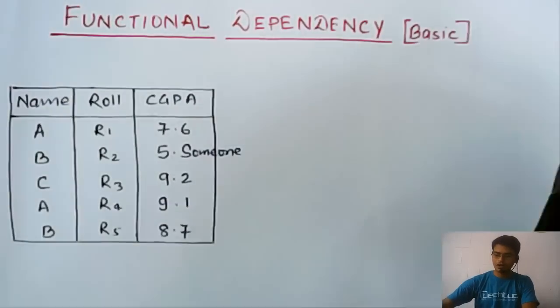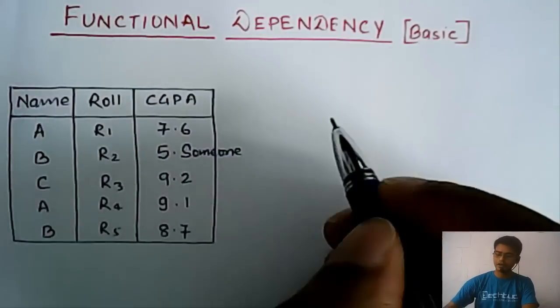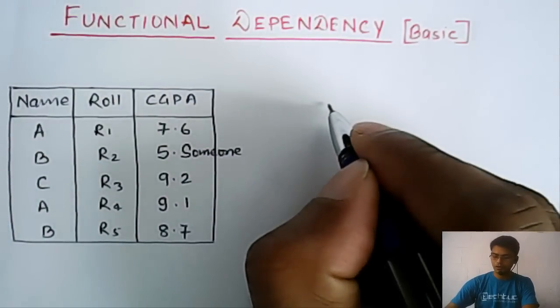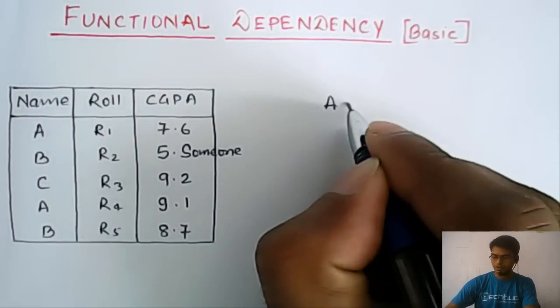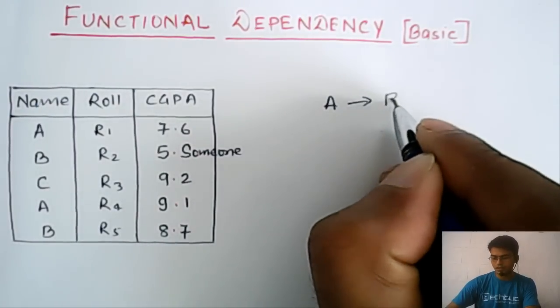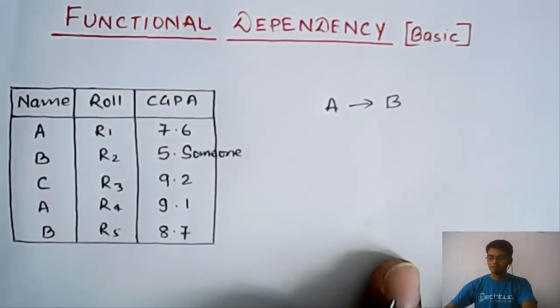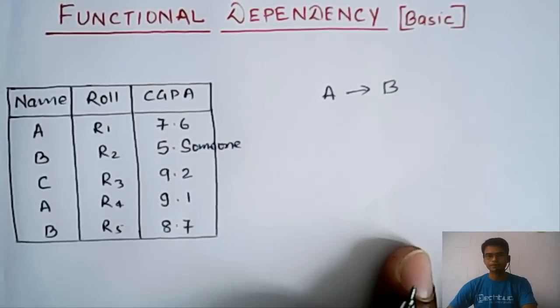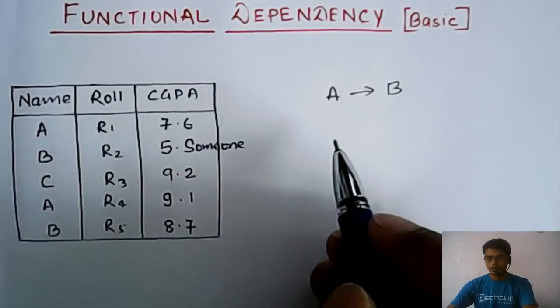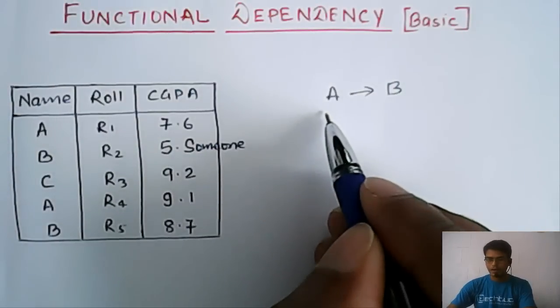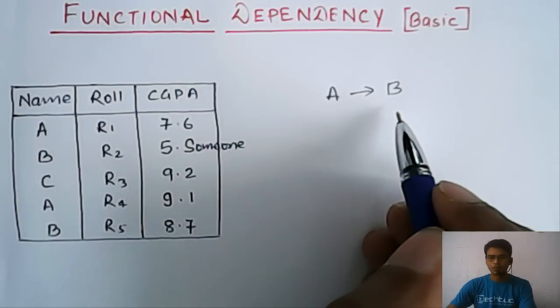It's a relationship among the attributes. We denote functional dependency as A determines B, and it represents the relationship among the attributes. It says A can uniquely determine B.